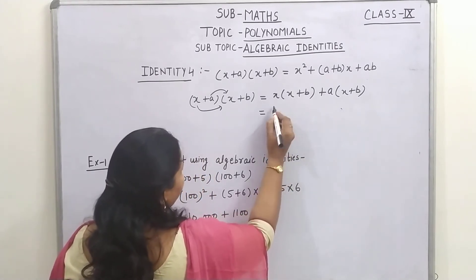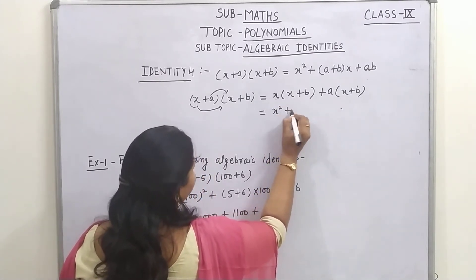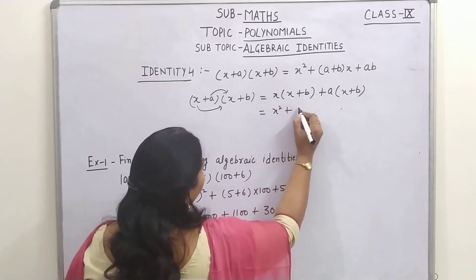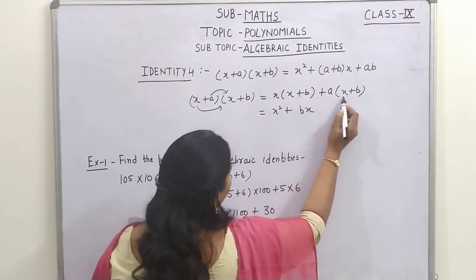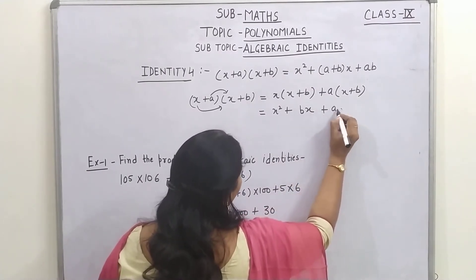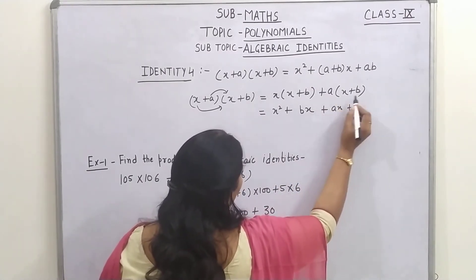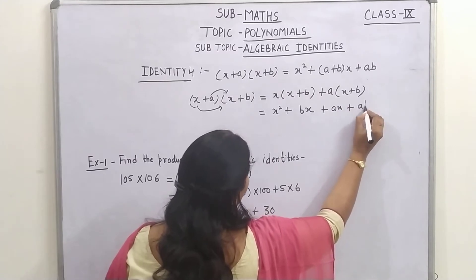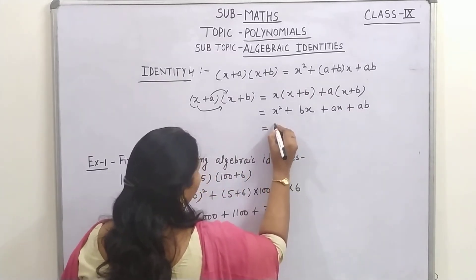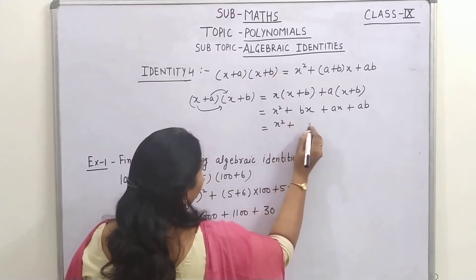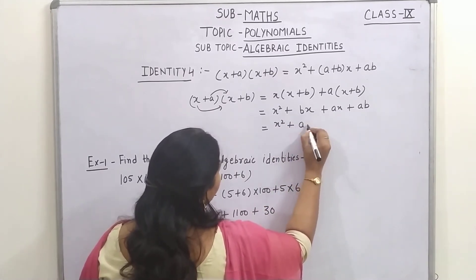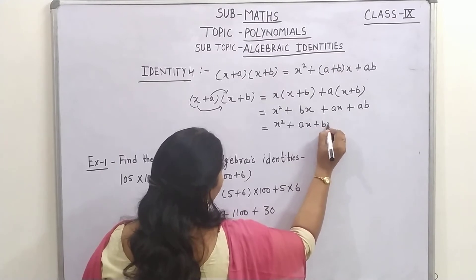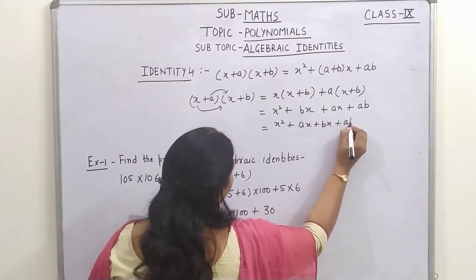Now multiply it term by term, x multiply by x becomes x square, x multiply by b becomes bx or xb, a multiply by x becomes ax and a multiply by b becomes ab. Now x square plus and we can interchange these both the terms, so ax plus bx plus ab.